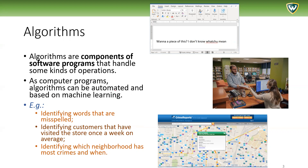As computer programs, algorithms can be automated and based on machine learning. They can be automated in the sense that any computer program can be automated — that's the whole nature of computers. They can turn on at a certain time, turn off at another time, and so on. Machine learning is another word for artificial intelligence; these terms are often used interchangeably. It's the idea of computer programs acting based on existing data and new incoming data — numeric data, textual data, photo image data, and so on.